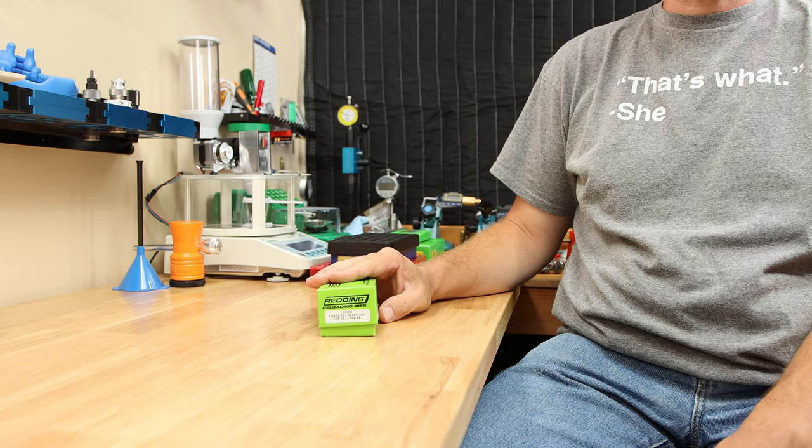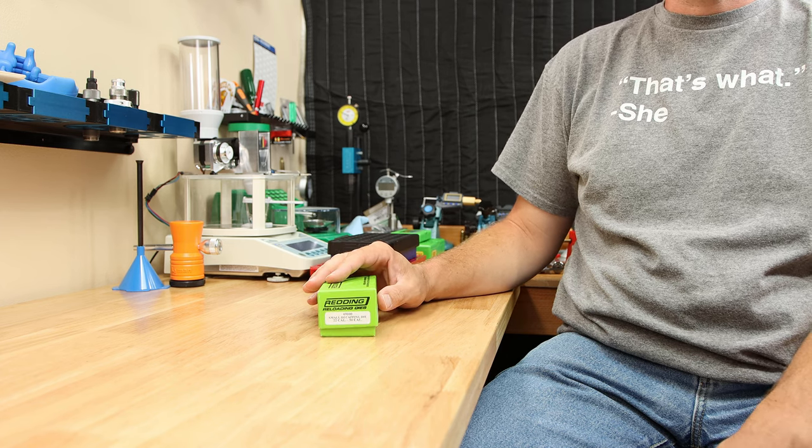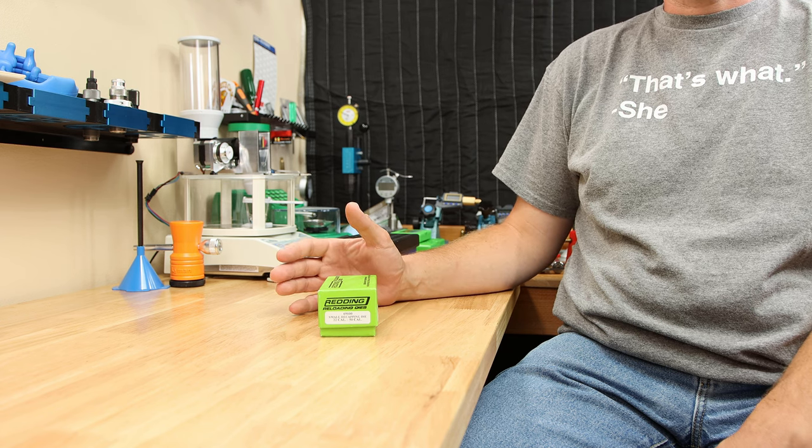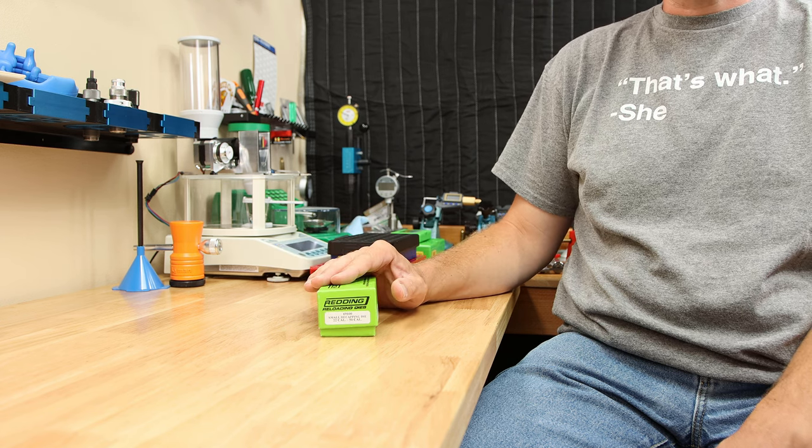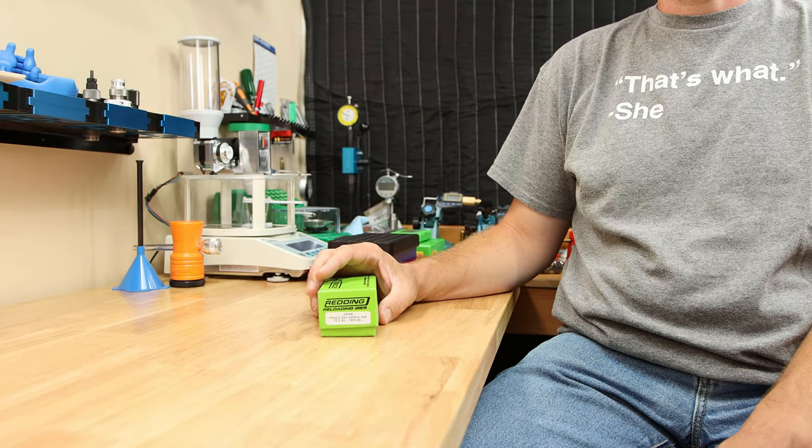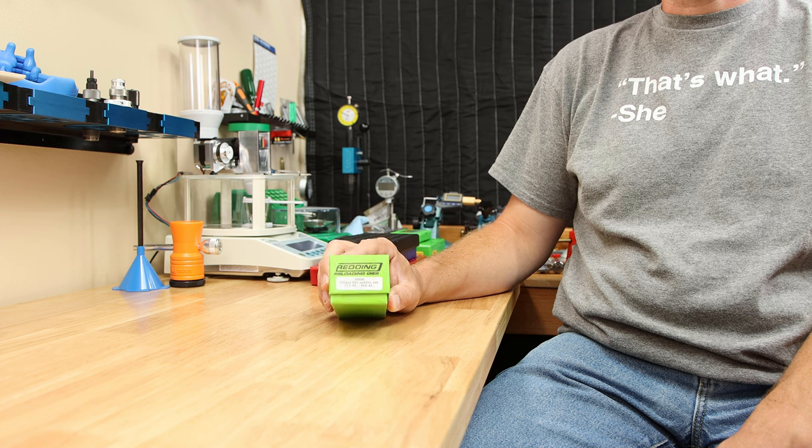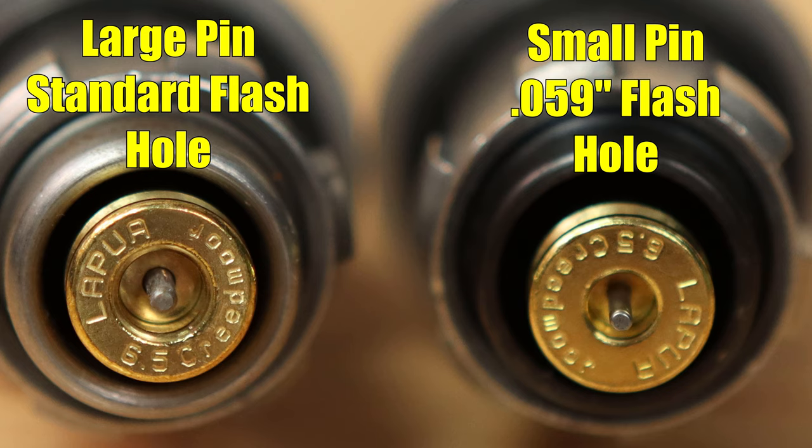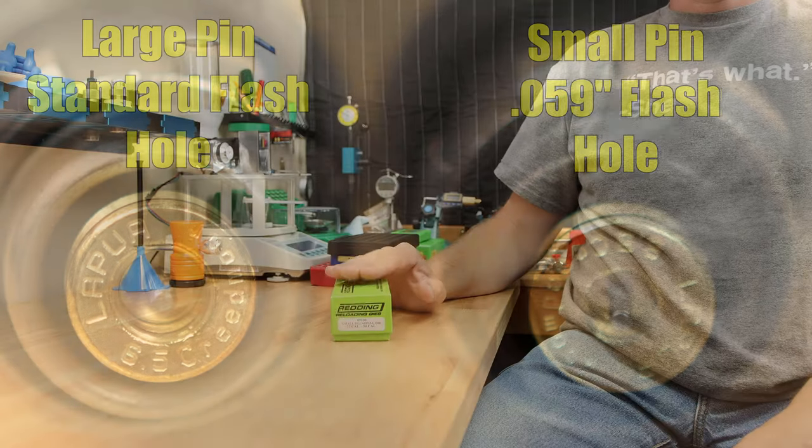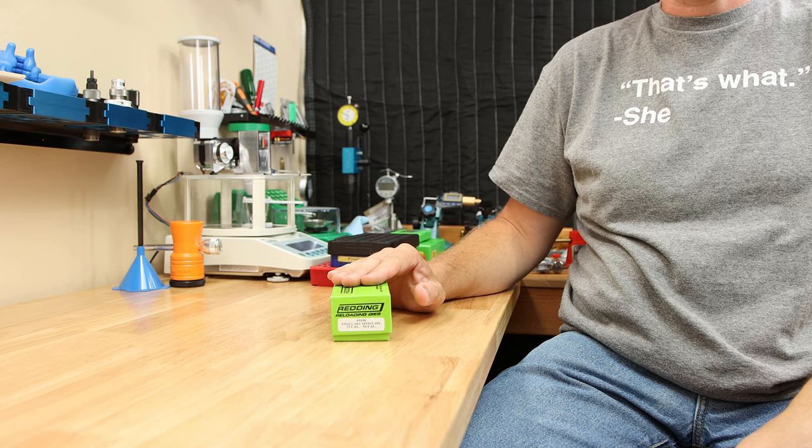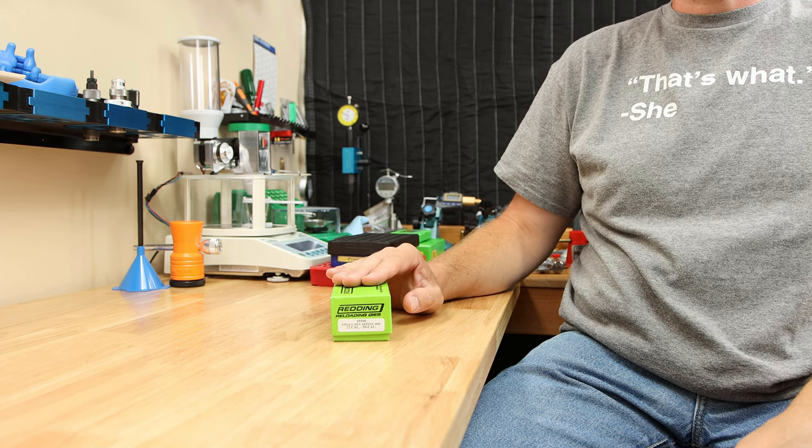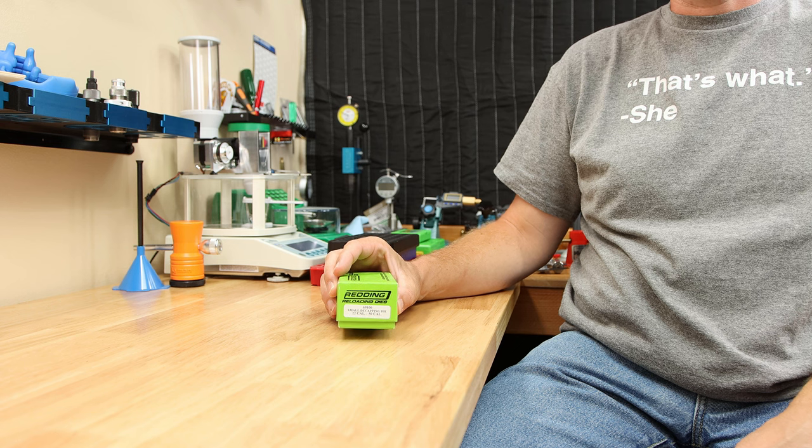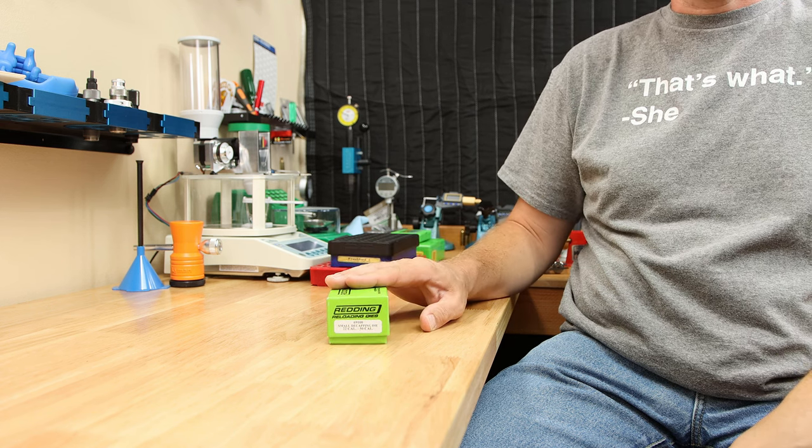Another tool that I use, depending on how your process works, is a decapping die. Most of your sizing dies are going to have a decapping pin, and you can use it, and that's fine. However, sometimes before I do a clean, I like to have my brass decapped, and I'll use a universal decapping die. Lee makes a wonderful universal decapping die. If there's a chance you're using a caliber that has small flash holes, you might want to look at something like this Redding. This small decapping die has a pin for a small flash hole. If you're using Lapua brass and 6.5 Creedmoor, this is going to decap your brass without wrecking your flash holes. The Lee works for most stuff, but for these small flash holes, this is kind of a lifesaver. It's not a have to have, but it's certainly nice to have when I need it.